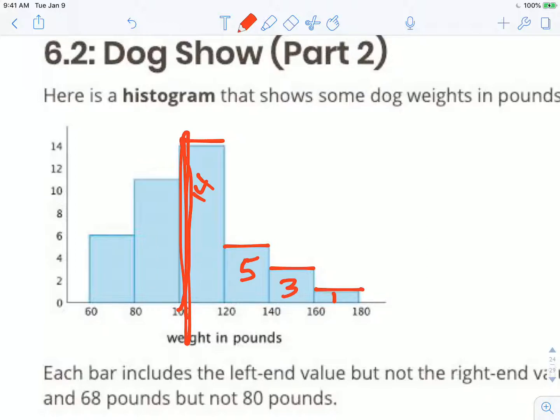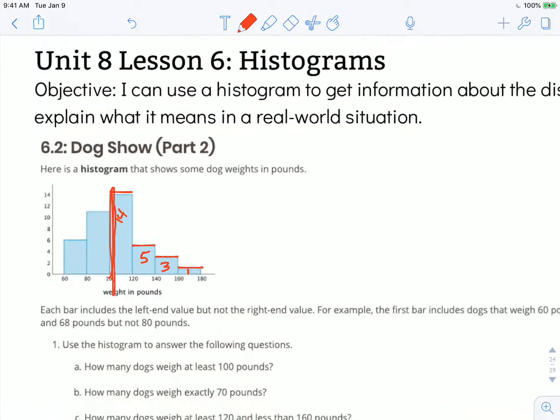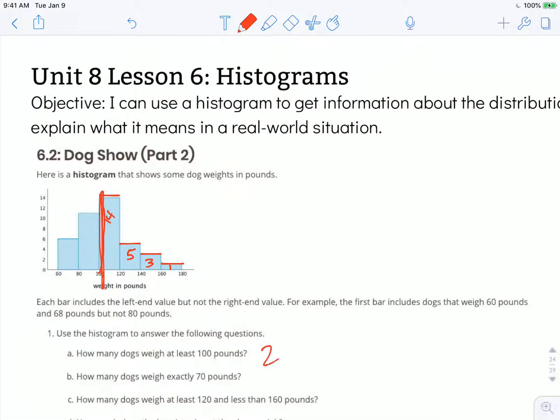And this next one is 3 dogs and this represents 1 dog. So we have 14 plus 5 is 19, plus 3 is 22, plus 1 is 23. So we have 23 dogs that are at least 100 pounds in this dog show.